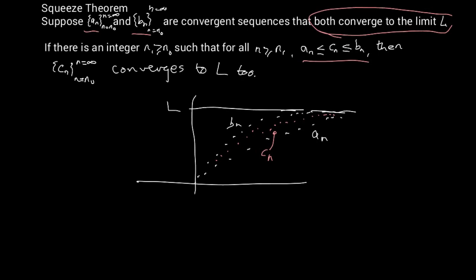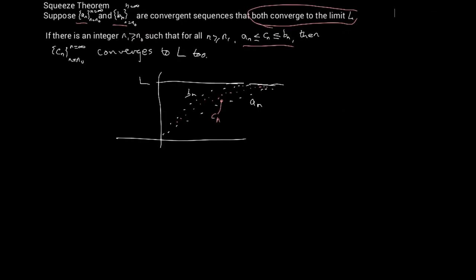Now let's look at an example to apply the squeeze theorem. We want to apply it to sin(n) over n², from n equals 1 to infinity. The easiest thing to start with is sin(n) itself — we know something about sin(n) in terms of inequalities. We know that it is between minus 1 and plus 1 for all n.